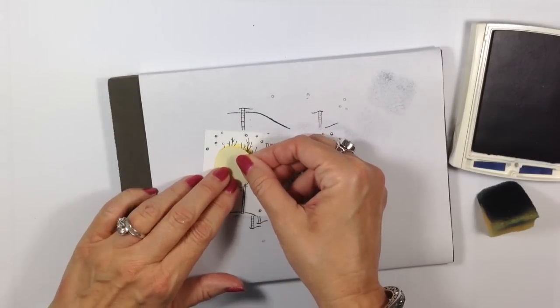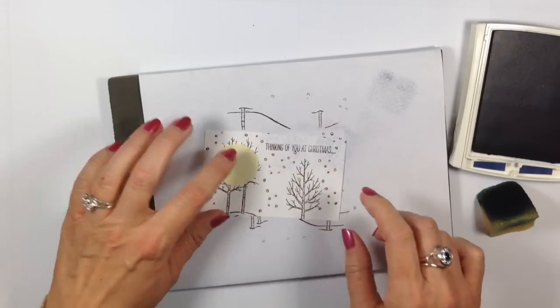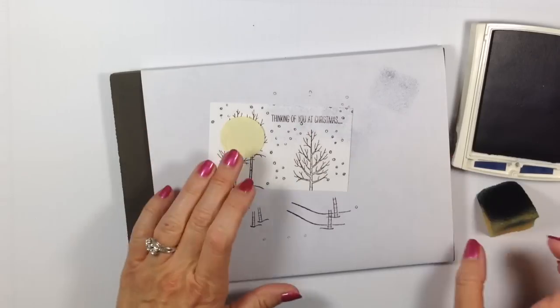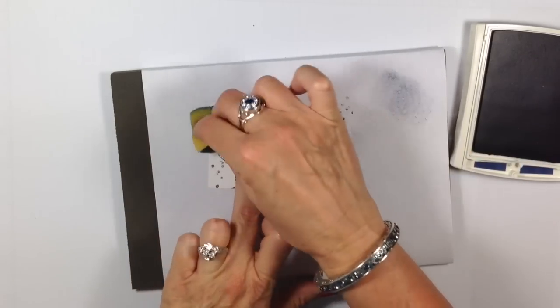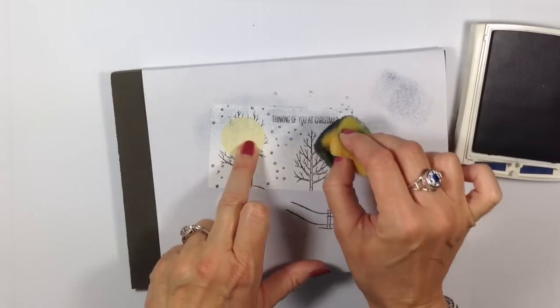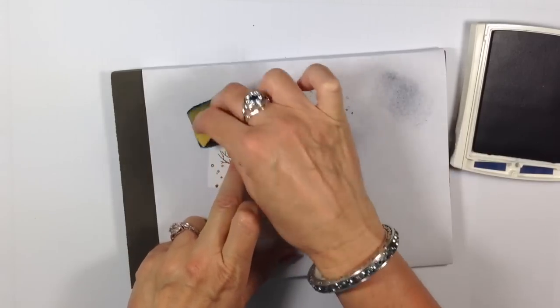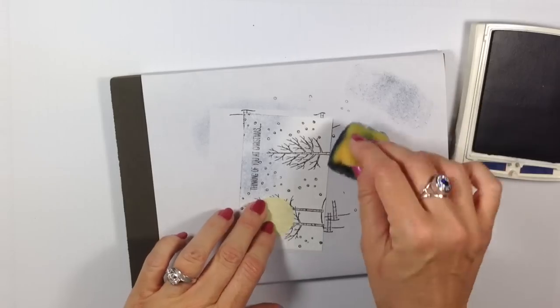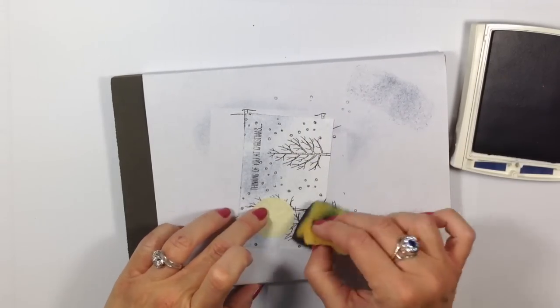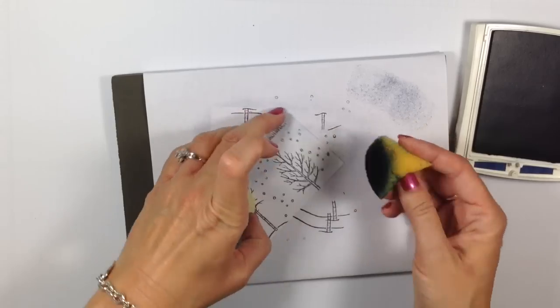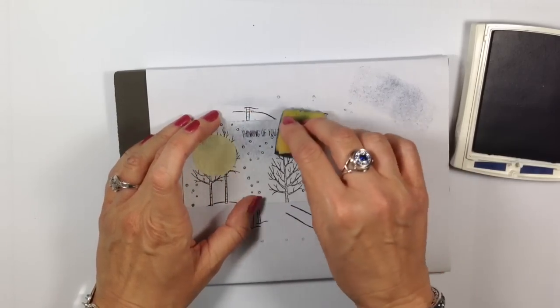I'm going to bring this mat in just so I don't make a huge mess. We're going to take some Night of Navy ink. I'm going to tap off just a little bit because I don't want it to come out too harsh. Let's just start to tap. Oh gotta cover up my moon or I'm gonna have a blue moon.